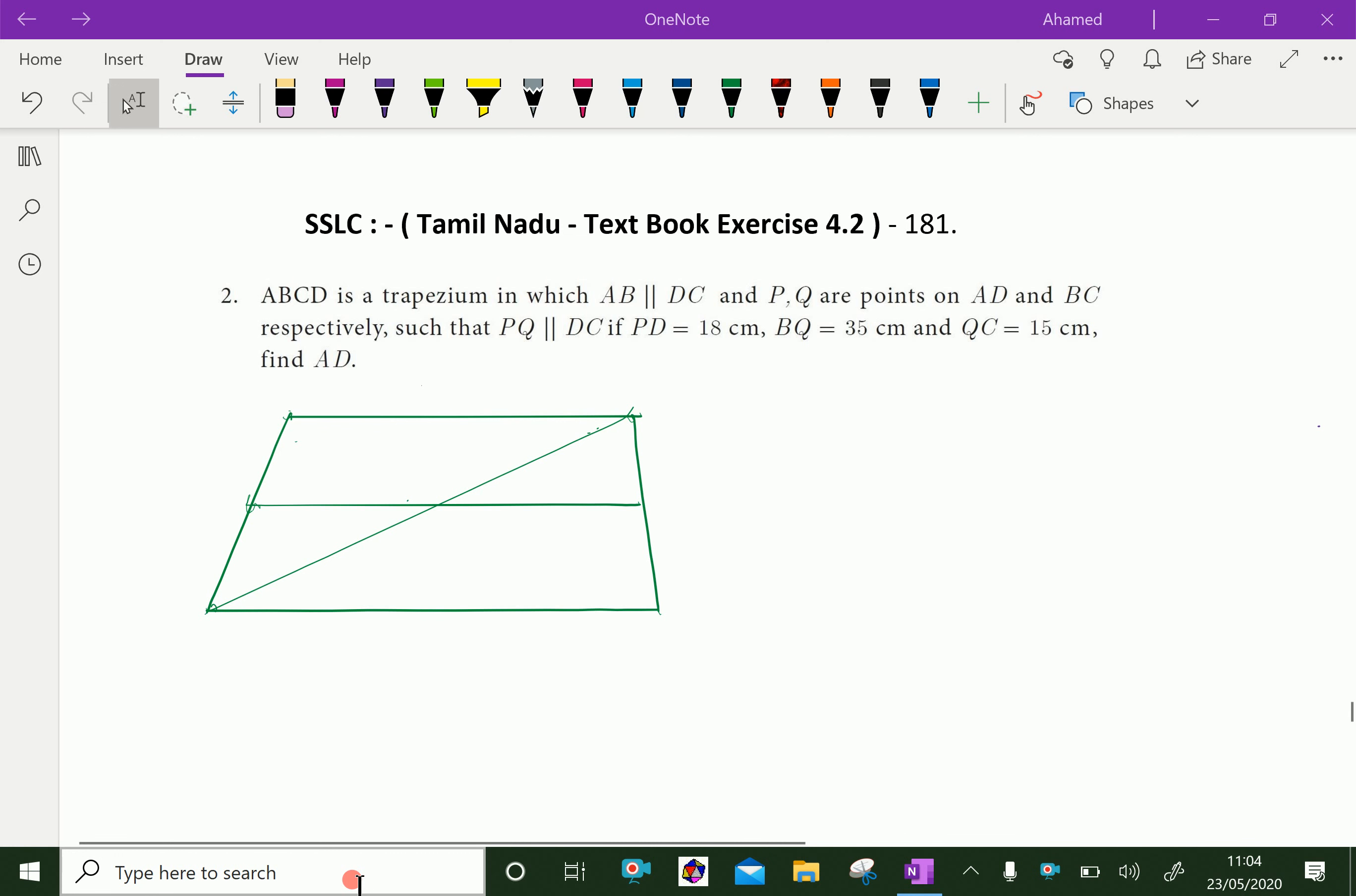Here, look at this figure, the trapezium is given, that is ABCD. In which P and Q are midpoints of side AD and BC, such that PD is 18 cm and PA is X and QC equal to 15 and BQ equal to 35.